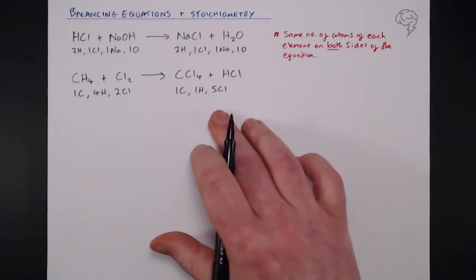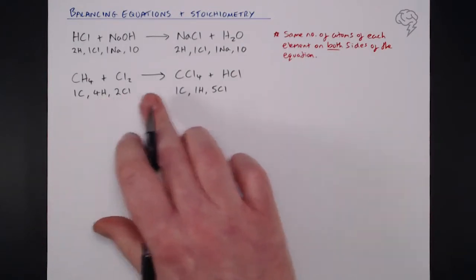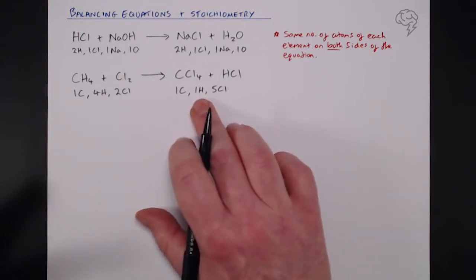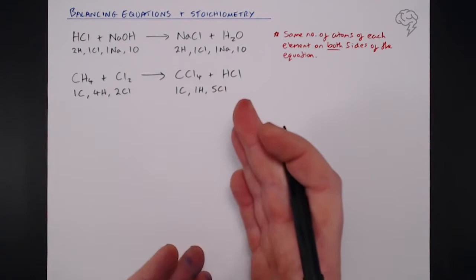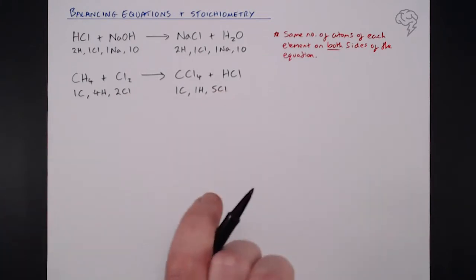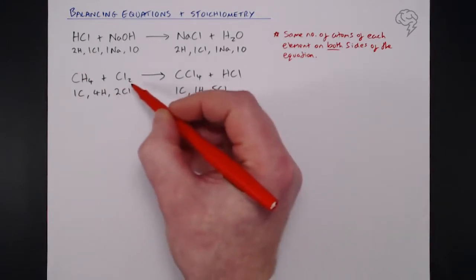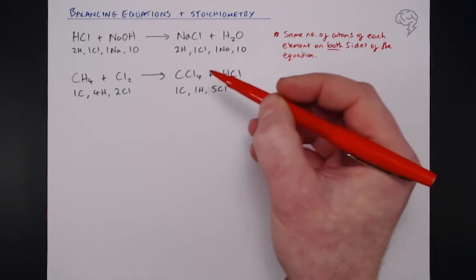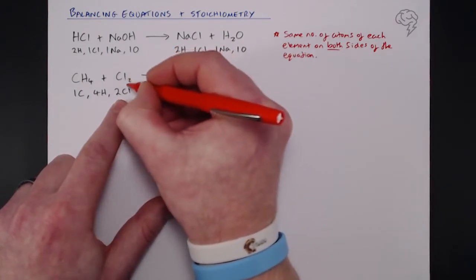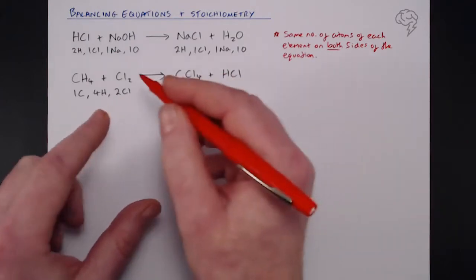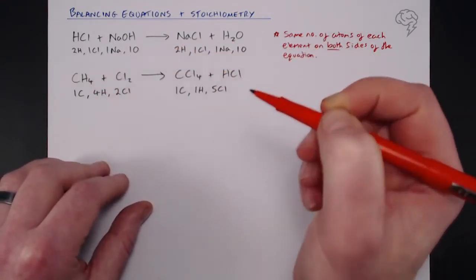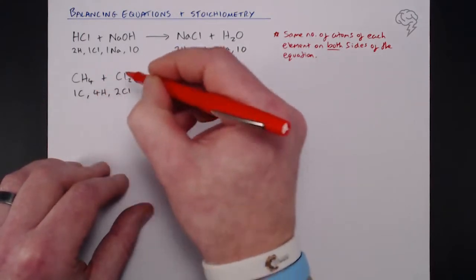This equation is not balanced — four hydrogens going in and one coming out is like putting a dozen cupcakes in the oven and only finding four when you open the door. Things just don't disappear, which is why balancing equations is so important. The first rule is you cannot change the formula of these substances — you can't just write Cl5 because Cl5 doesn't exist. You cannot change the chemical makeup or formulae of your reactants and products.